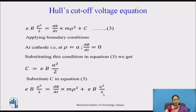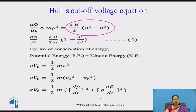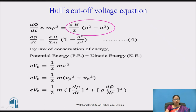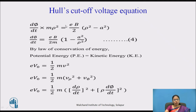Substituting this constant back into equation 3, the two similar terms can be combined by factoring out EB/2, giving: d phi/dt · m·rho² = EB/2 · (rho² − A²). Dividing both sides by m·rho² to isolate d phi/dt: d phi/dt = EB/(2m) · (1 − A²/rho²). This is equation 4.